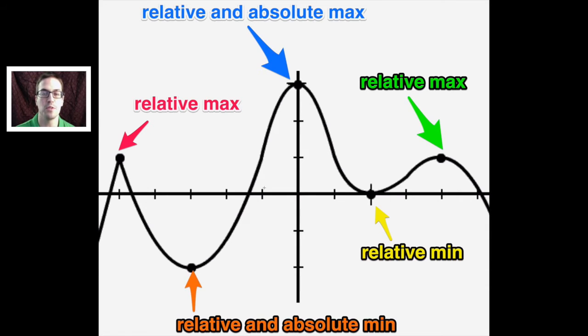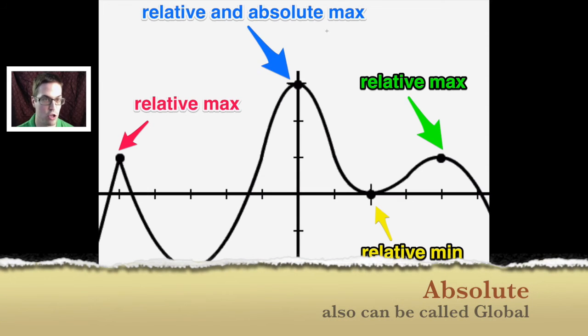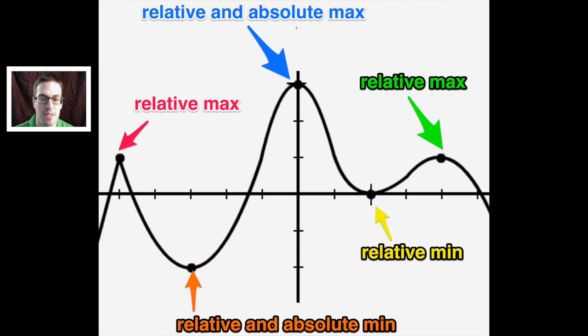However, the one difference here between this point right here and this point right here is that they both are also the relative and absolute maxes. Now absolute max, or sometimes it's called global max, also means that it's absolutely the biggest maximum value in that function on that interval.